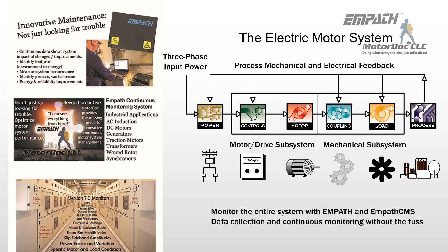Since then, people have focused on just the electric motor. The continuous system looks at the impact of changes. It also looks at potential opportunities, not just looking for trouble. So we can take a look at things such as system performance, process, waste stream, and then also help identify and improve energy and reliability process improvements.